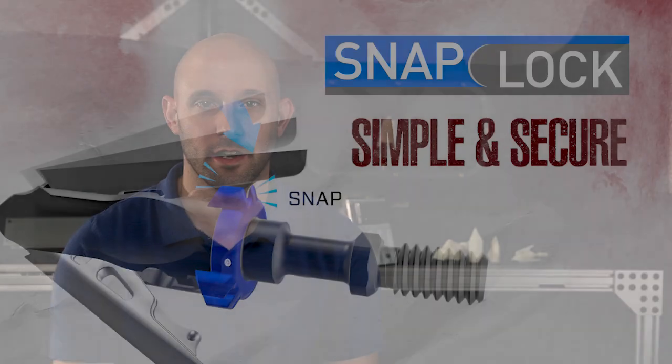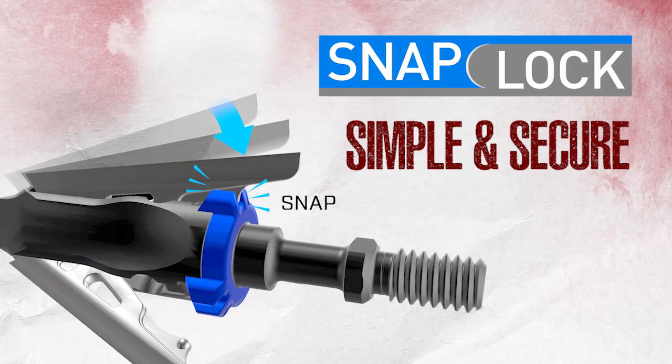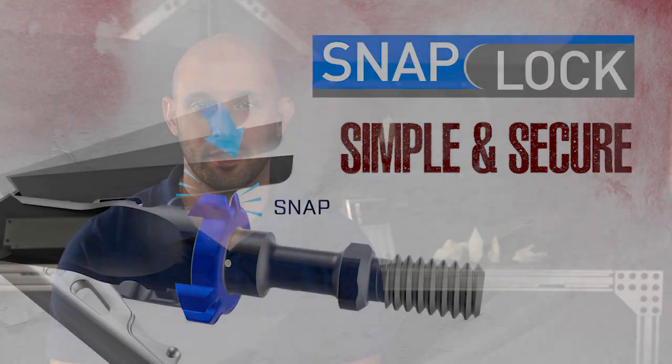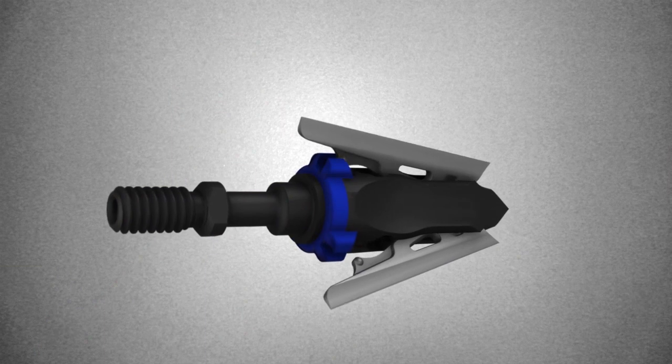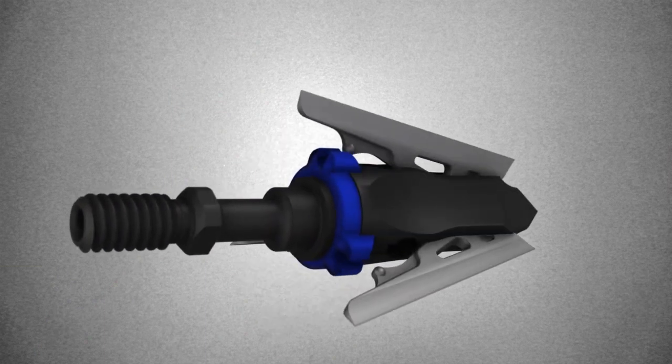What we're really excited about is the snap lock feature. With other heads before this, it wasn't real intuitive or simple to use, but with this it's a ball and socket design. You basically push the blade down, or the ball, into the little blue retainer, and if you hear it click or feel it click, you know it's in place. If you don't feel that or don't hear that, you know it's not.